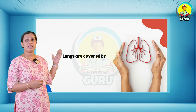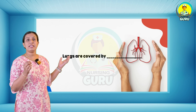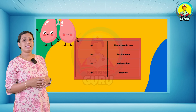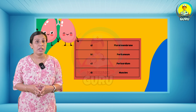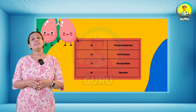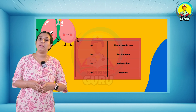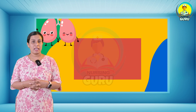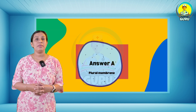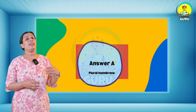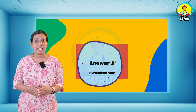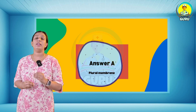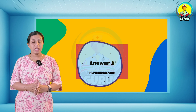Second question: the lungs are covered by what? The options are: first, pleural membrane; second, peritoneum; third, pericardium; and last, muscle. The right answer is option A — each lung is enclosed in a double membrane called the pleura.